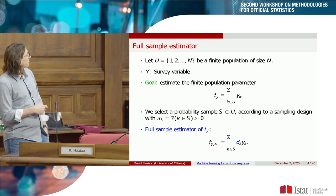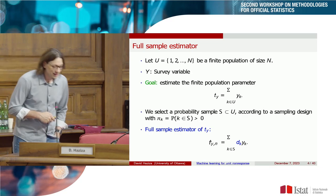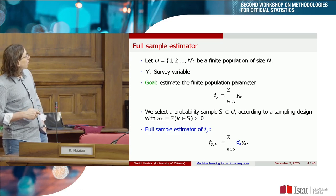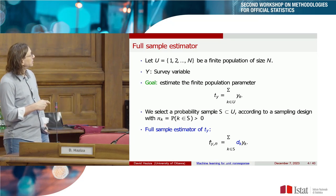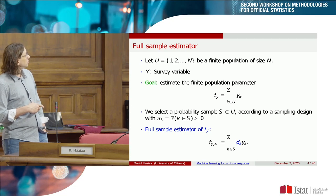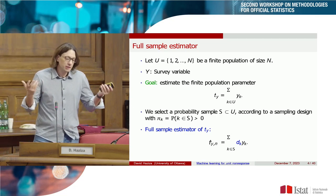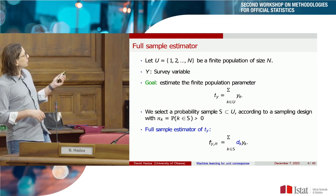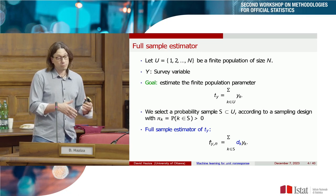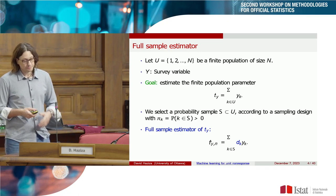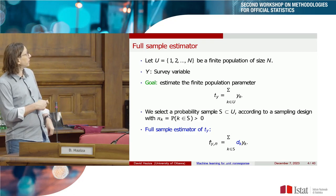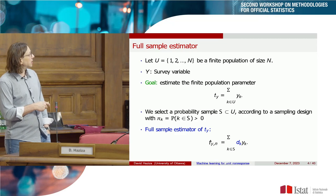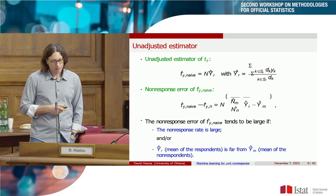So just a bit of notation. We have a population U of size N, Y is our survey variable, and we want to estimate the population total of Y. We select from the population a sample according to a sampling design with known first-order inclusion probabilities. If everybody responded, the prototype estimator would be the Horvitz-Thompson estimator, where the design weights are the usual weights.